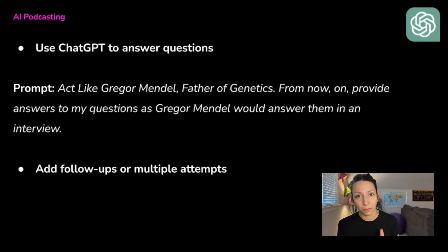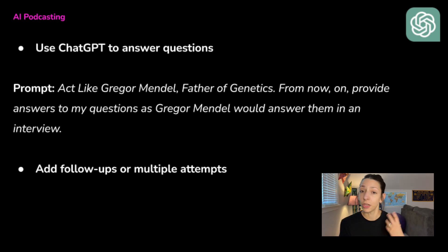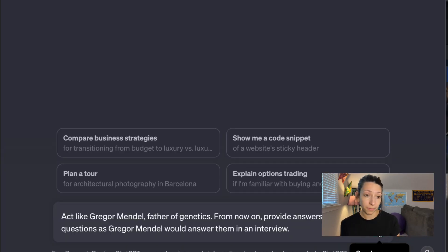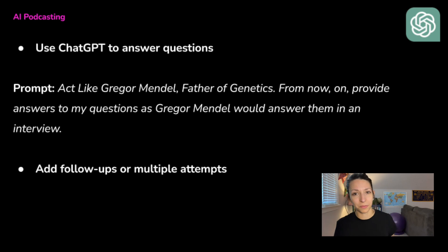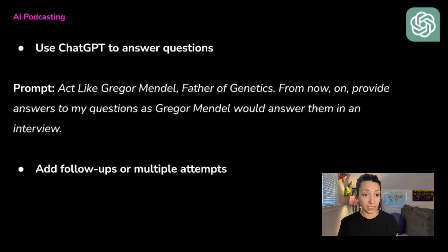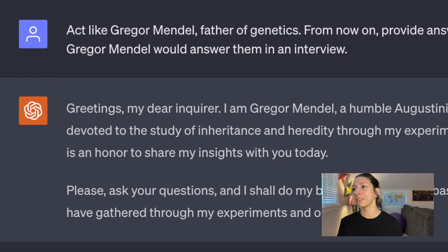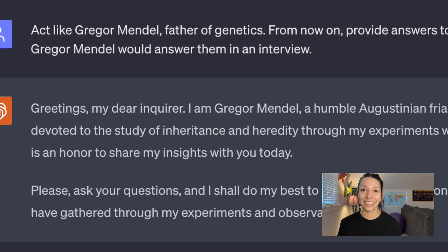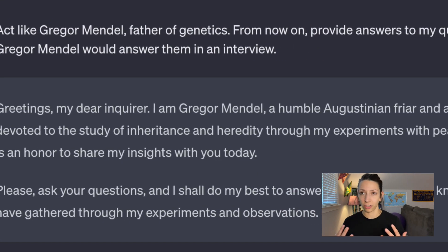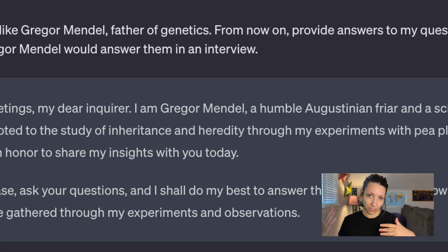Next, go to ChatGPT or another large language model like Bard and tell it to be the person you want to interview. The prompt I used — which you can copy from the description — was: 'Act like Gregor Mendel, father of genetics. From now on, provide answers to my questions as Gregor Mendel would answer them in an interview.' Mendel then introduces himself, though I didn't end up using all of that introduction in the podcast — you can cut out the parts you don't like.